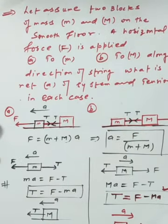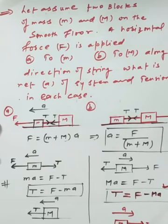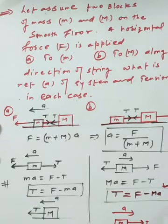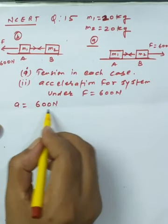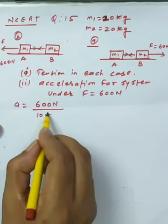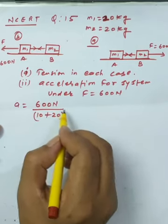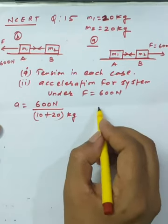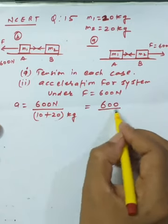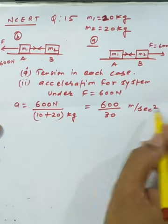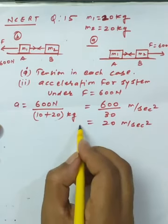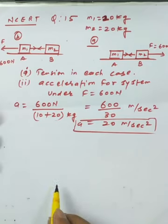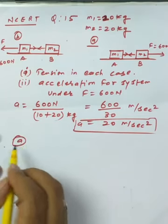Using the formula a = F / (m1 + m2): a = 600 / (10 + 20) = 600 / 30 = 20 m/s². This is the common acceleration of the system.